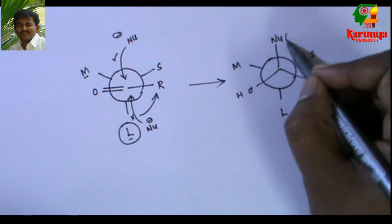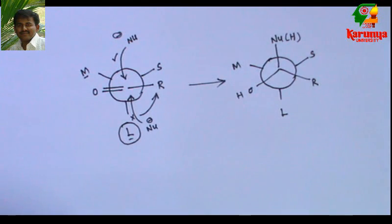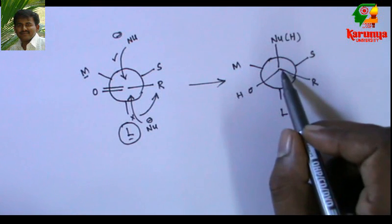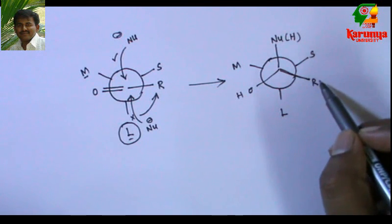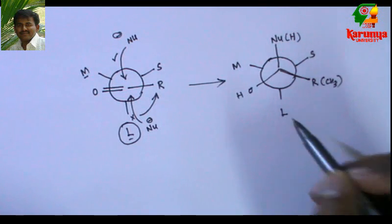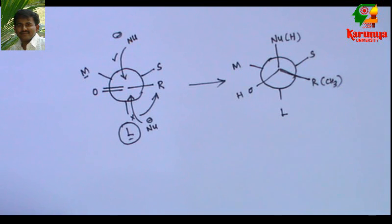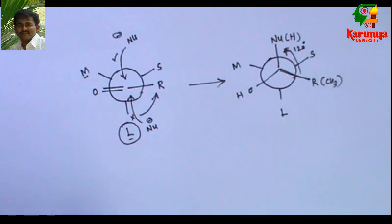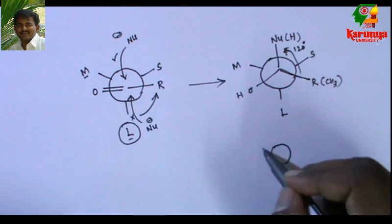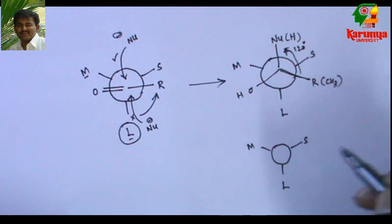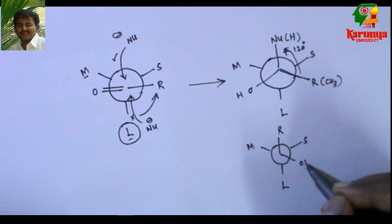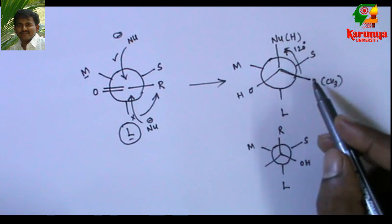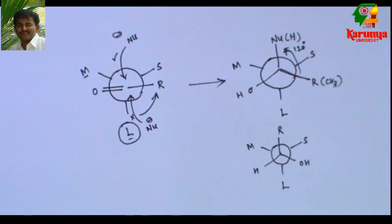In our case, the nucleophile is hydrogen from lithium aluminum hydride. Now, this methyl and the large group should be trans to each other. Then only you can arrange them in the zigzag line. So I rotate this by 120 degrees and what we get is this compound, the same whatever we have got in the earlier model.